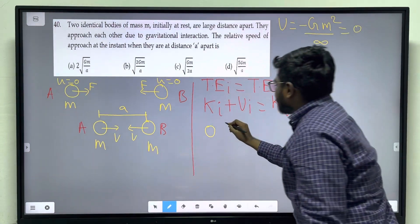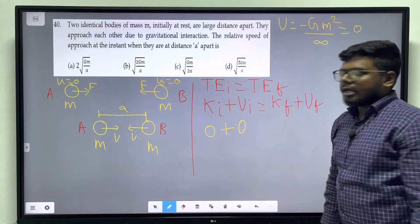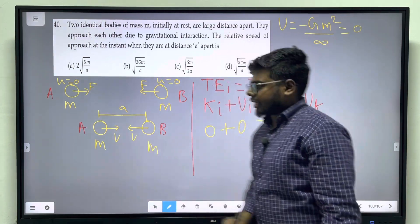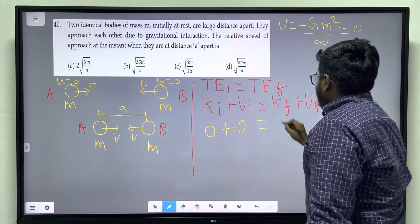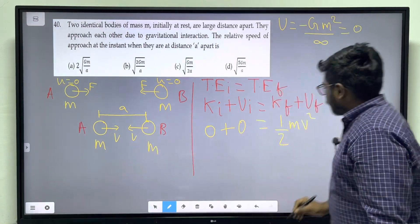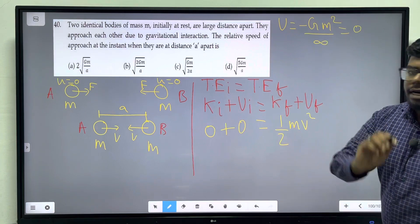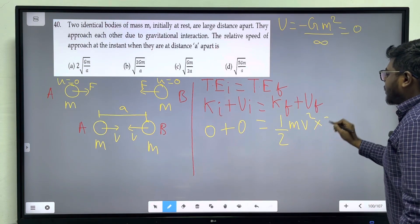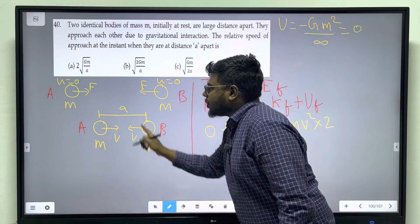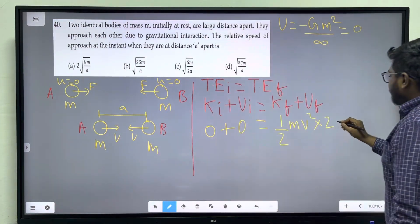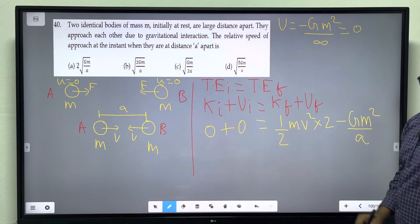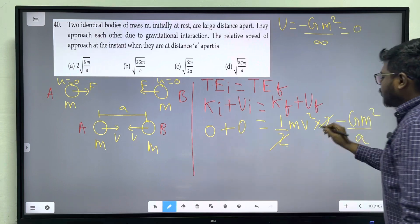So potential energy is zero. Kinetic energy final. Two particle V in the velocity gain. In the particle half M V square. It is also half M V square. In the system final kinetic energy. Number 2 multiply. Potential energy final. Two mass is a distance. Number minus G into product of the masses divided by distance. So in the 2, 2. Number cancel.